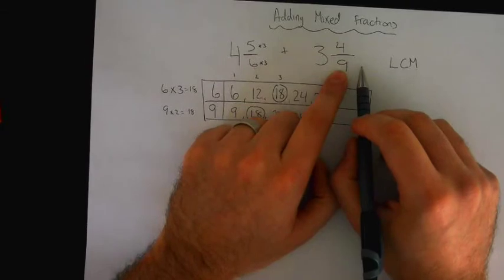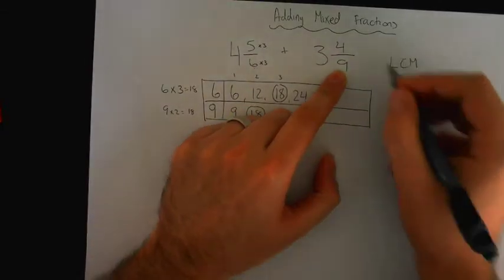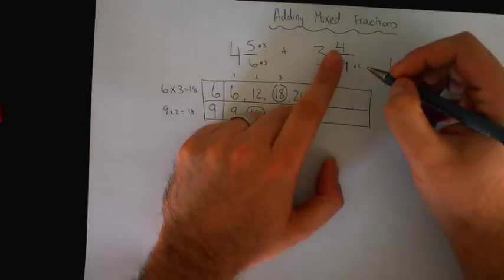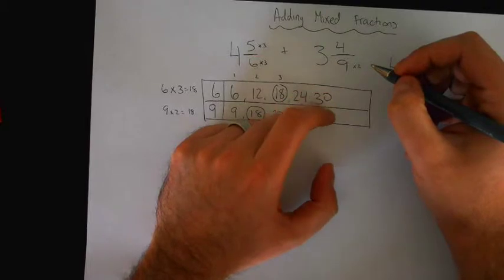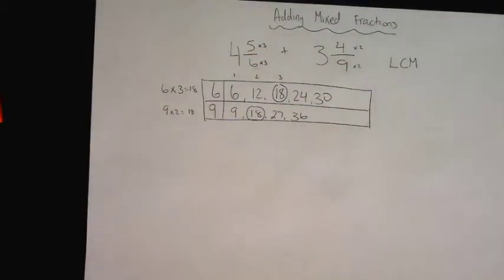And this one here becomes what? What do we do with this one? Viraj? Times by 2. And then if you do the bottom one times 2, what do you do to the top one? Right. Multiply that by 2 as well.